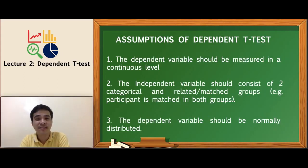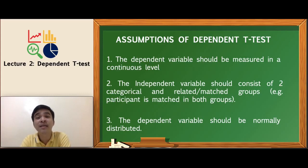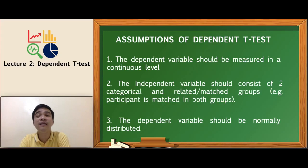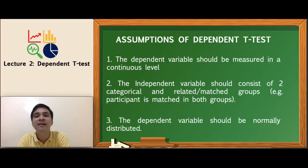Just like other parametric tests, dependent sample t-test also needs to fulfill several assumptions. Number one, the dependent variable should be measured at a continuous level. If your dependent variable is measured at a nominal or categorical level, then dependent samples t-test will not be appropriate. Number two, the dependent variable should be normally distributed. As a researcher, you need to establish a diagnostic analysis, testing for possible outliers in the dataset, especially extreme outliers that could technically influence the distribution of your data.